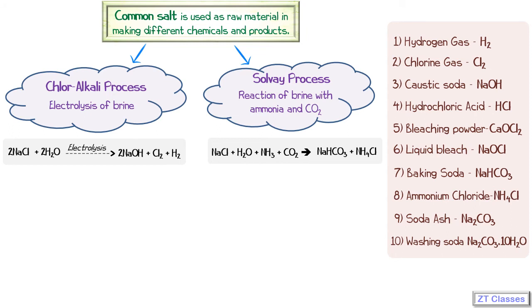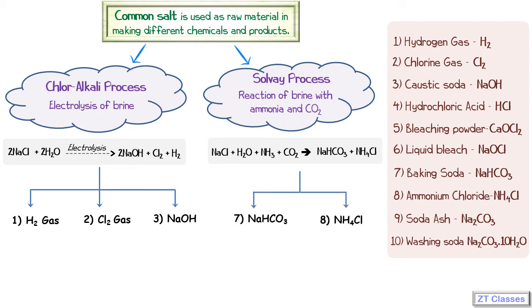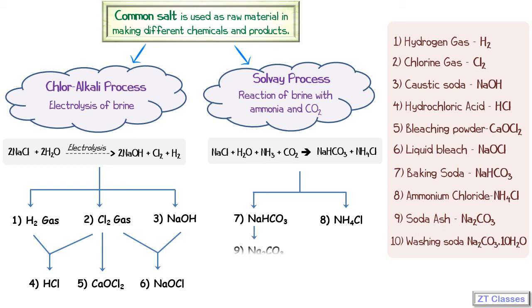Let's see how we obtain all ten products. From the chloralkali process, we directly get three products: hydrogen gas, chlorine gas, and caustic soda. From the Solvay process, we get baking soda and ammonium chloride. Further, hydrogen gas and chlorine gas when reacted give hydrochloric acid. Chlorine gas passed over slaked lime gives CaO·Cl₂, that is bleaching powder. Chlorine gas reacted with caustic soda gives liquid bleach. On the other side, baking soda when heated gives soda ash (Na₂CO₃). Soda ash reacted with water by crystallization gives washing soda. In the next lecture, we will discuss how to obtain these products in the form of reactions and what their uses are.